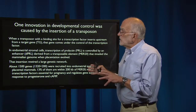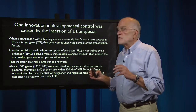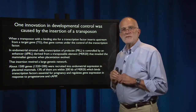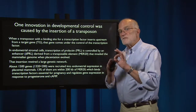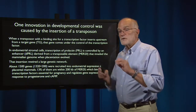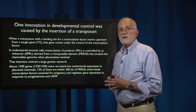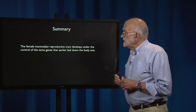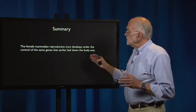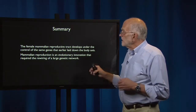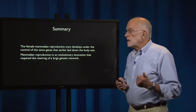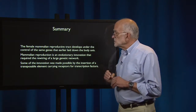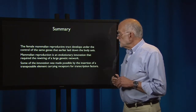So this is one way that innovation can occur in evolution: a transposon comes in carrying a binding site for a transcription factor, and if it inserts upstream from a series of other genes, some of which code for transcription factors, it results in the rewiring of a genetic network. To summarize: the female reproductive tract develops under the control of the same genes that earlier had laid down the body axis. This is an evolutionary innovation that required rewiring of a large genetic network, made possible in part by the insertion of a transposable element carrying receptors for transcription factors.